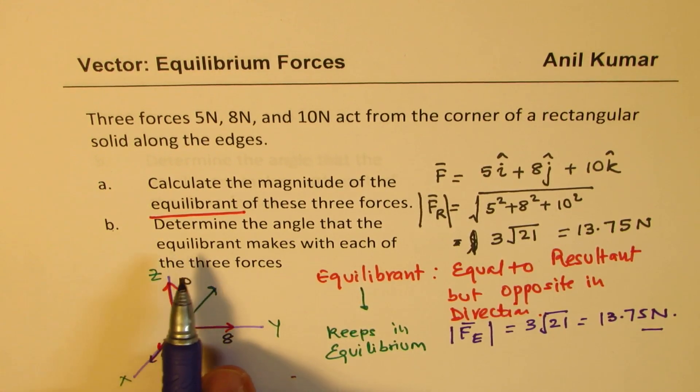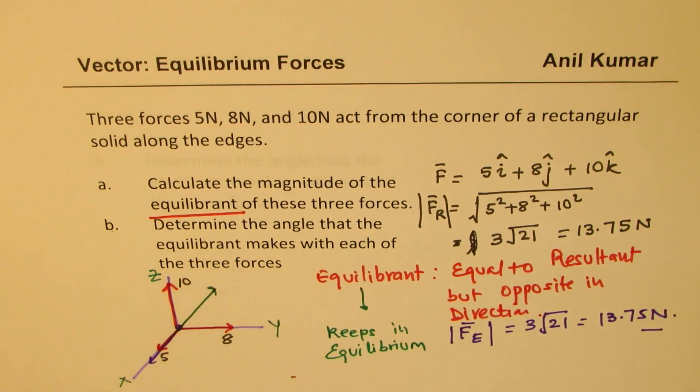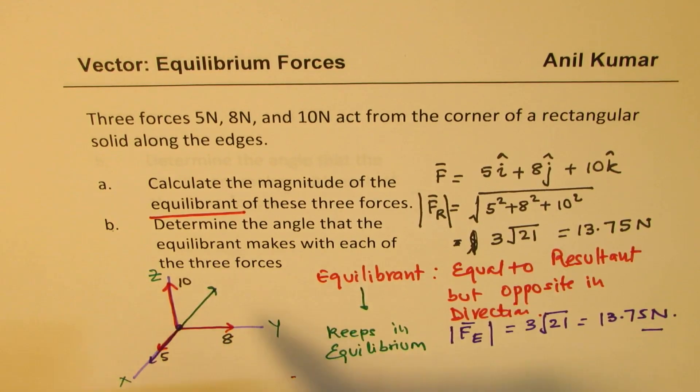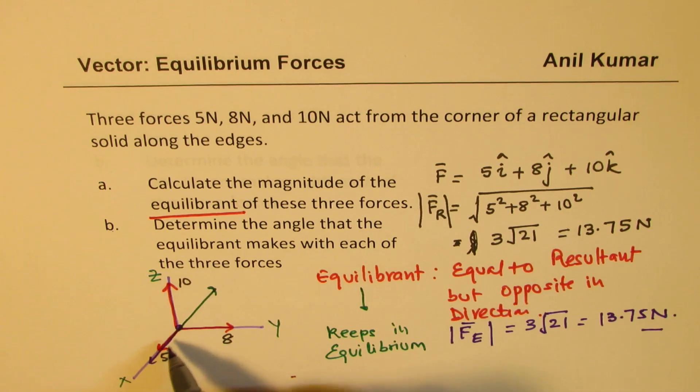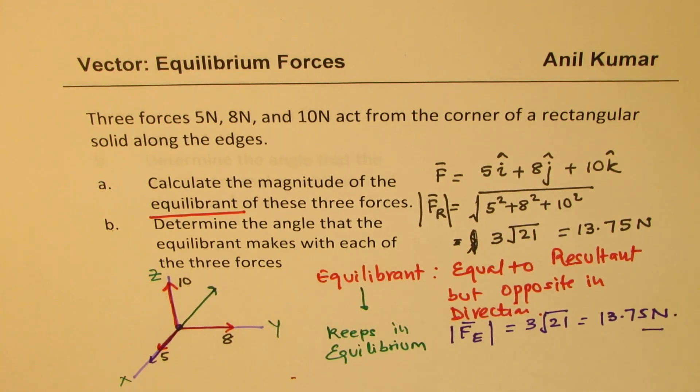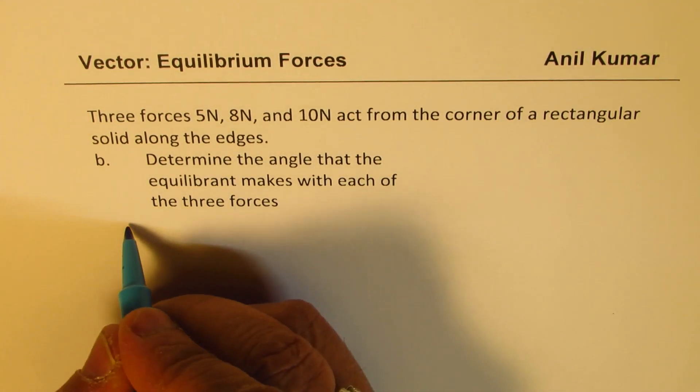Now part b is: determine the angle that the equilibrant makes with each of the three forces. In our diagram we'll actually find the angle for the given force and 180 minus that will be the angle for the equilibrant forces. So let's do it on the new page.